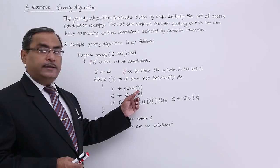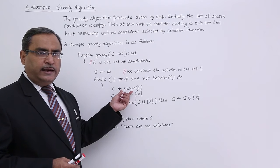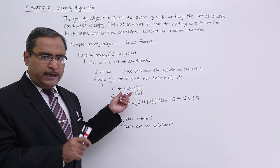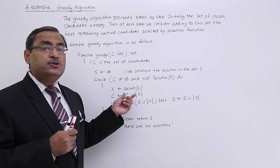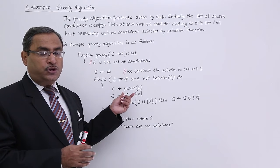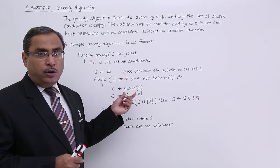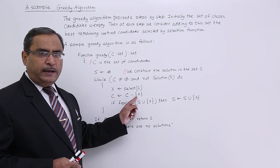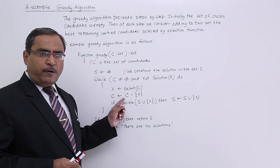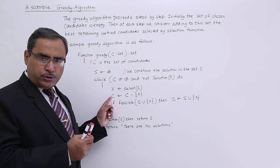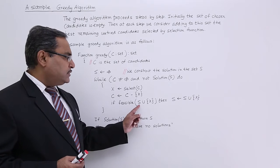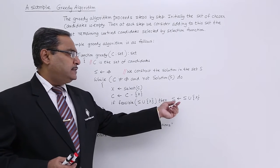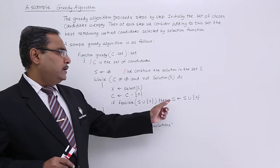X is equal to select(C). Select is a function that will select one candidate from the set of candidates — one which is not tried yet and which is the most promising. Promising means that including this particular candidate in the solution set will lead us toward an optimal solution. The candidate X is then removed from the set of candidates via set difference, so the set of candidates gets reduced by one element. If feasible — that is, if inclusion of that candidate in the solution set S via union is feasible — then S is equal to S union the set containing X only.